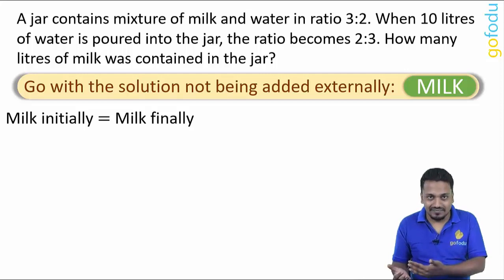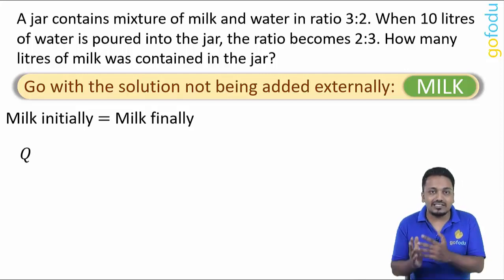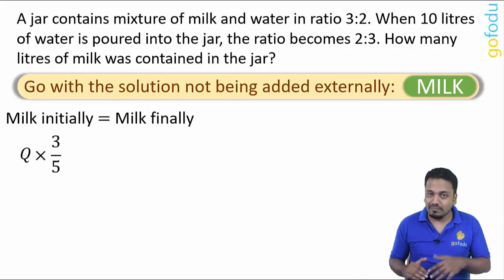So milk present initially in the jar will be equal to milk present finally in the jar. Milk present initially - well initially the quantity of mixture is Q with proportion of milk as 3/5. So milk present initially will be Q × 3/5.